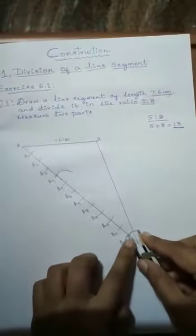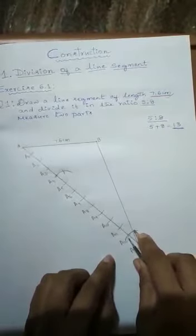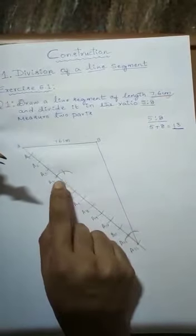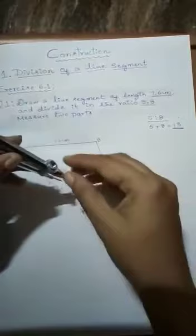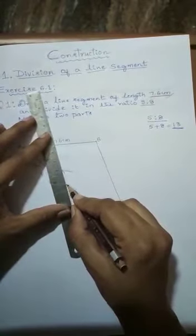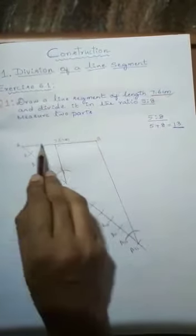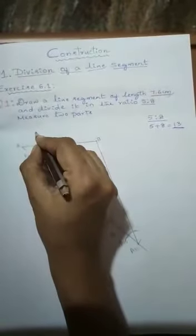Using that measurement, draw an arc that touches the ray — from there, draw an arc to get one X point. From that X point, draw a line that touches the line segment AB. Mark this point as C. So AC is one part and CB is another part — we have divided the line segment into two parts, AC and CB, which are in the ratio 5 is to 8.